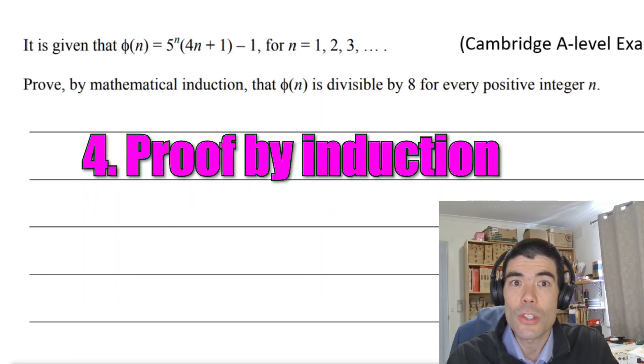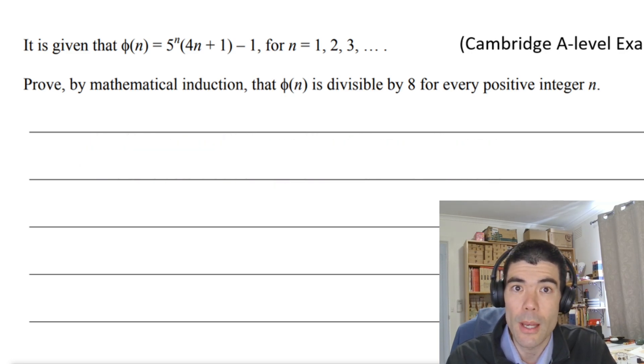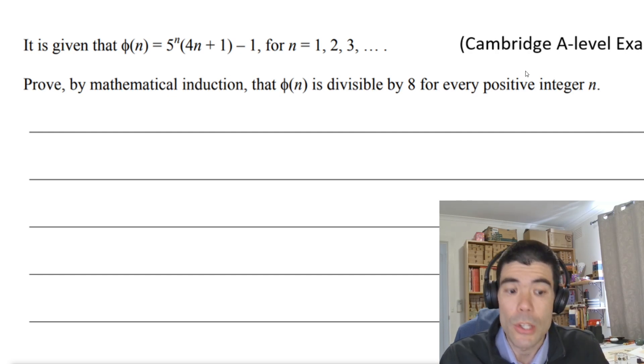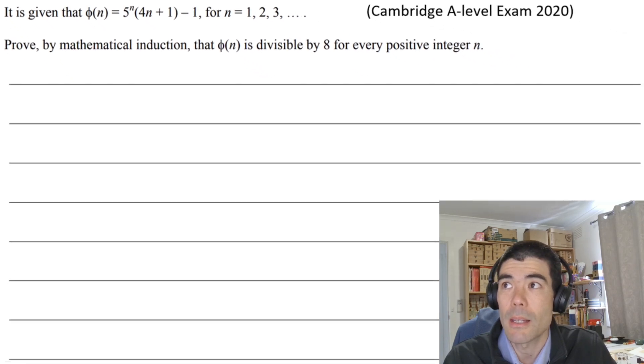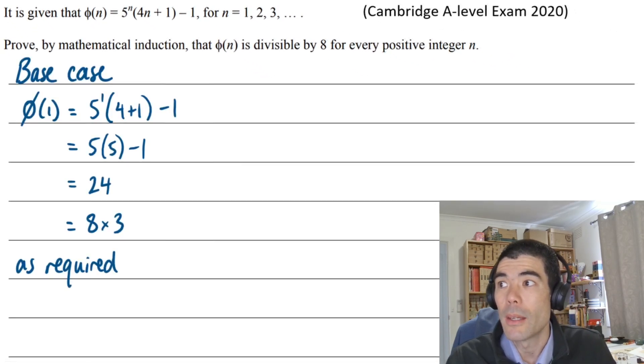Next is proof by induction. This was new to the study design in 2023. It did appear on the 2023 exam one, as well as the Northern Hemisphere 2024 exam, and also heavily on those VCAA sample questions for 2023. So highly likely this is going to come up on your exam one or exam two. This is actually a Cambridge A level exam question. It's a divisibility type. We need to prove that this expression is divisible by 8 for every positive integer n. As always with proof by induction, easy to get started. We just do the base case. We sub in one and we get 24. That is a multiple of 8 as required. The base case is going to get you one mark.